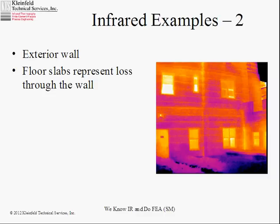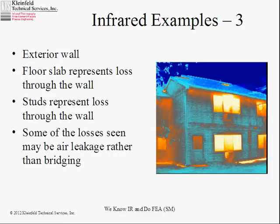This is an exterior wall. There's a concrete slab floor here, and concrete is fairly conductive. When it's connected directly to your outside wall, it's going to represent a heat loss. If you look at infrareds in cold weather on the outside of buildings with almost any kind of wall construction, you will see this — and that represents a thermal bridge and a heat loss.